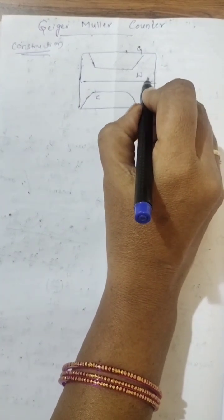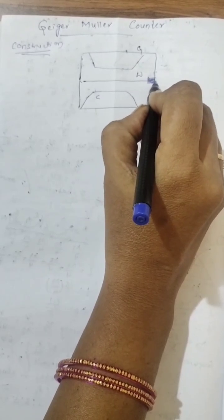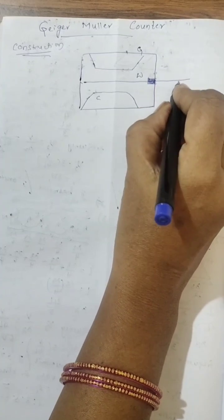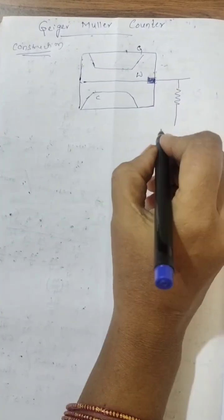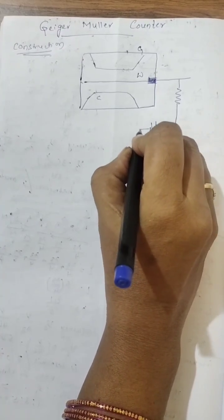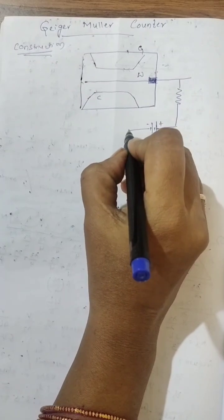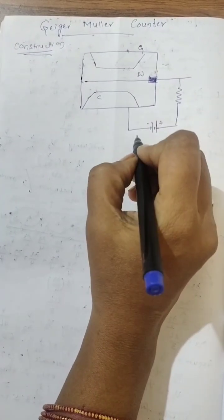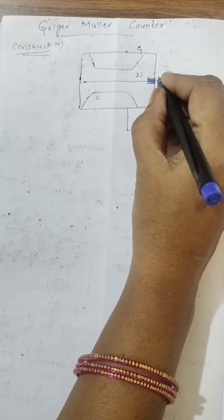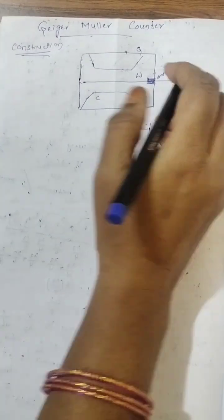This tungsten wire is isolated from the glass tube. This is connected to the positive terminal of the high tension battery. And the negative terminal is connected to the copper tube. So, tungsten wire acts as anode or collecting electrode.